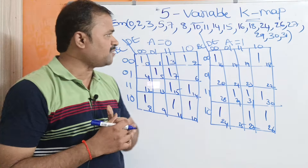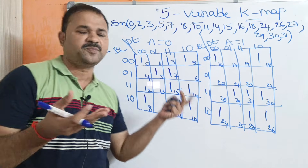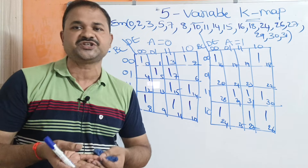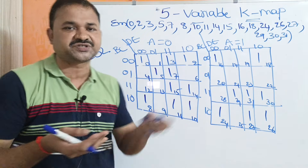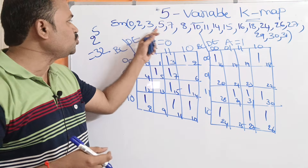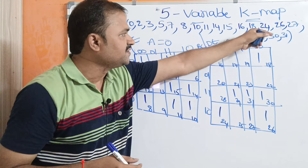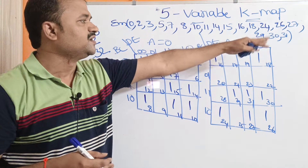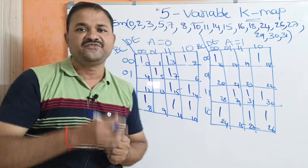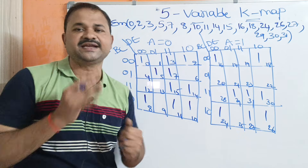Now we need to solve this problem. Here sigma specifies a summation operation, and M specifies minterm — minterm means a product operation on the variables. So sigma M specifies sum of products. The given function is sigma M(0, 2, 3, 5, 7, 8, 10, 11, 14, 15, 16, 18, 24, 26, 27, 29, 30, 31). For all these minterms we write 1 in the Karnaugh map. That is already done, so now we have to perform the grouping.